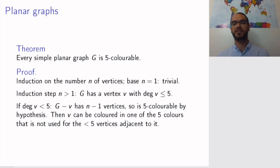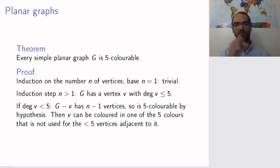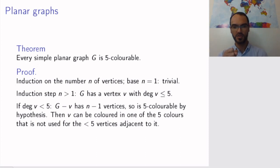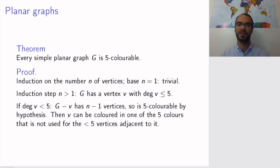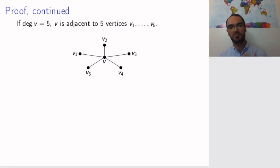If the degree of this vertex is strictly less than five, then we can play the same game. We remove the vertex; the remaining graph has n minus one vertices, so it's five-colorable by the induction hypothesis. When we put it back, it will be adjacent to fewer than five vertices, so one of the five colors will at least be available and we can color our vertex with it. So that case is just as the previous case.